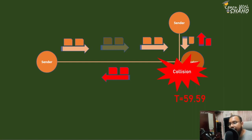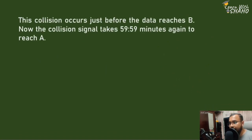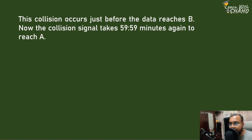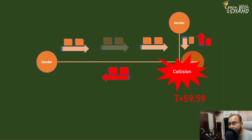The total propagation time is considered when a packet is being transferred to the maximum distance. The maximum frame size is checked as double the propagation time. The transmission time must be at least equal to double the propagation time. The collision happens just before the data reaches receiver B.